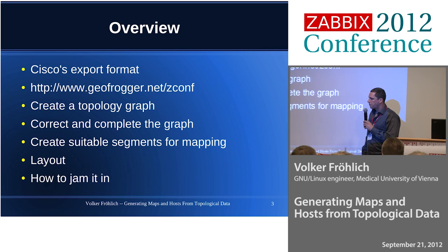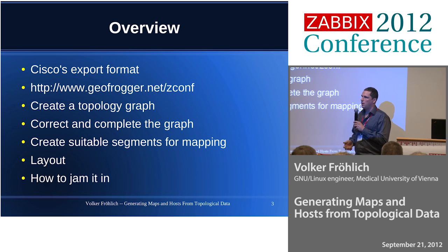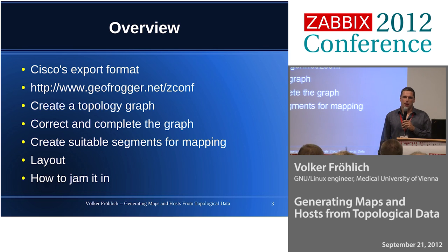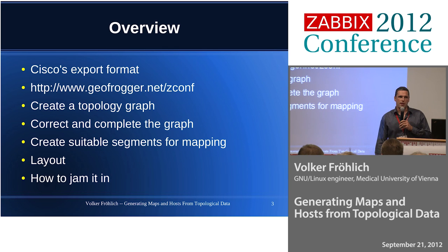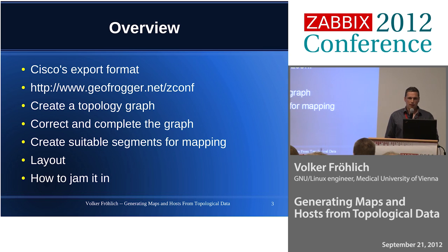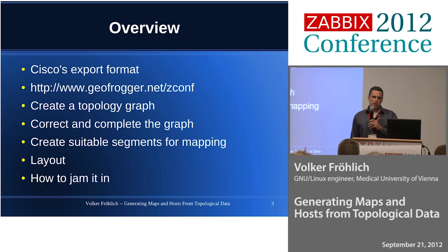In other cases, we have to add information on our own because Cisco Prime only takes care of Cisco devices, so every non-Cisco device will not show up. As we have thousands of hosts, such a map inside Zabbix would be just very big for one single screen, so we will have to split it up into smaller parts. We also need X and Y coordinates to finally make a Zabbix map, so we will have to do layouting as well.